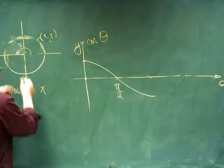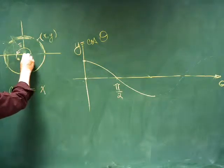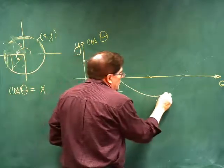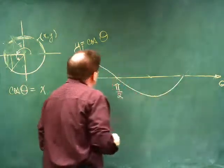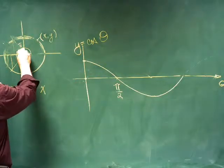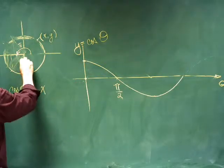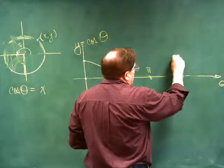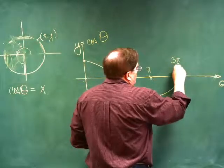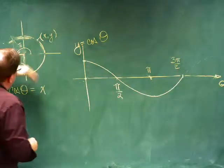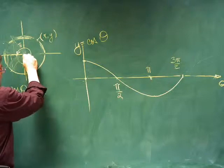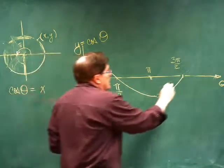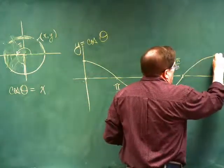And then as it grows bigger than that, then that x value starts to be closer and closer to zero, until it gets to zero when the angle is all the way around to here. This happens at 3 pi over 2, and then it begins to increase from there positively until it finally gets to 2 pi, and we're back to where we started.